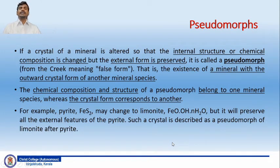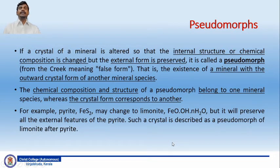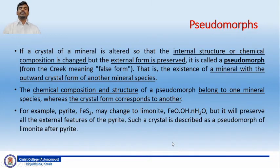The chemical composition and structure of a pseudomorph belongs to one mineral species, whereas the crystal form corresponds to another. Chemically and structurally, the mineral belongs to one species whereas the crystal form corresponds to another type of mineral.